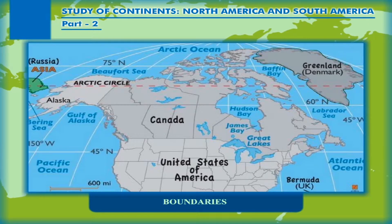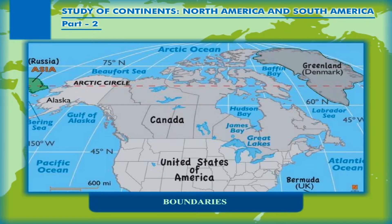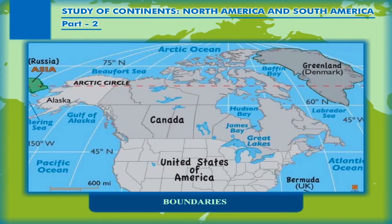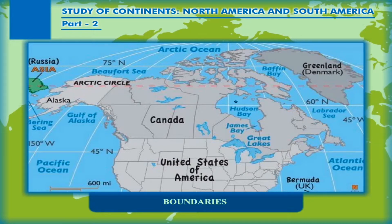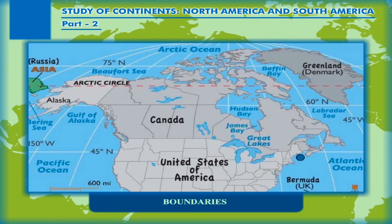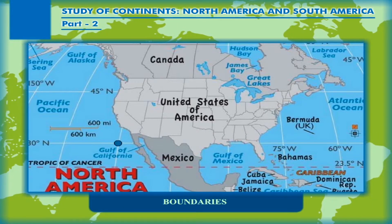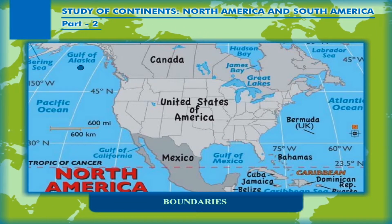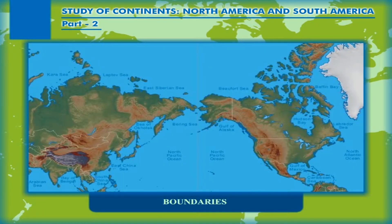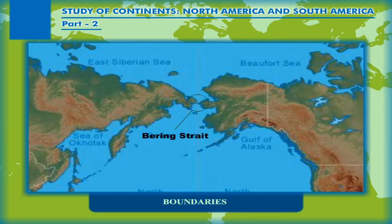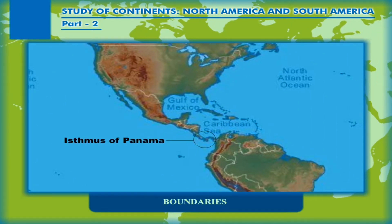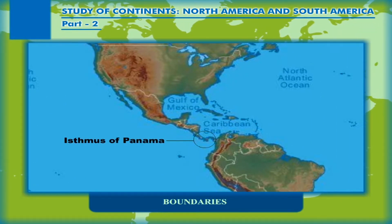A number of islands including Greenland, Denmark lie towards the north of the continent's mainland. The bays and gulfs that form part of the continent are the Hudson Bay, Gulf of St. Lawrence, Chesapeake Bay, Gulf of Mexico, Gulf of California, Gulf of Alaska, and the Baffin Bay. The Bering Strait separates North America from Asia in the northwest.